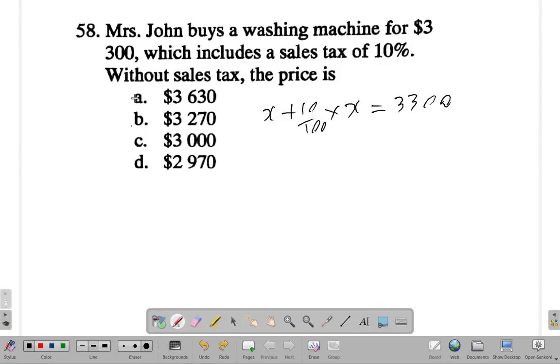All right, the other thing is $3,300 and this tax was 10%. Well, it's kind of substantial, it's a large tax, so 3270 is too close to 3300.